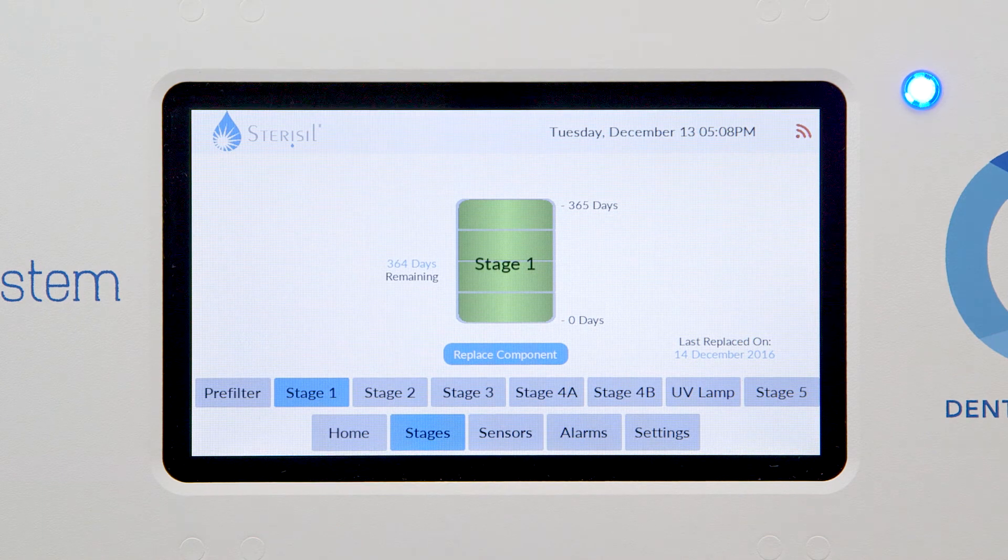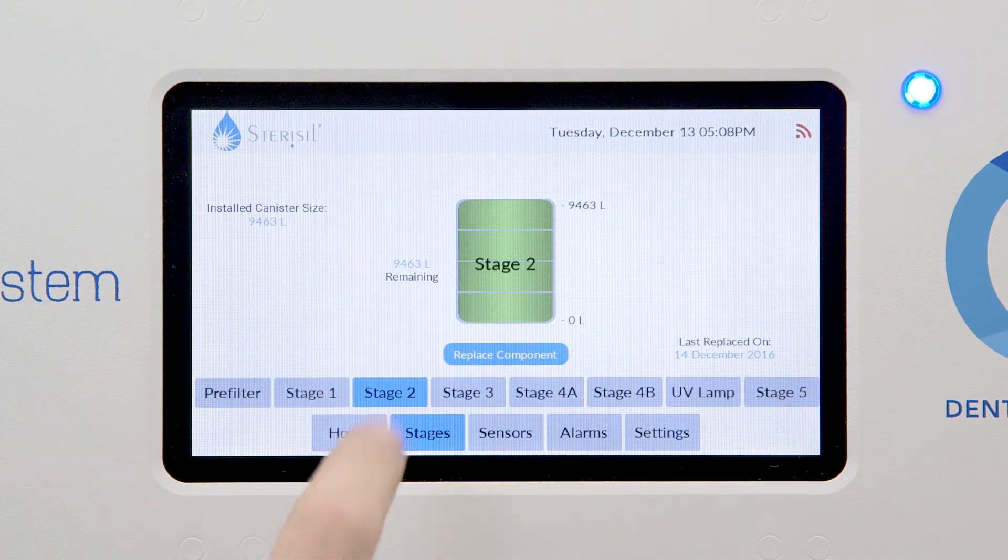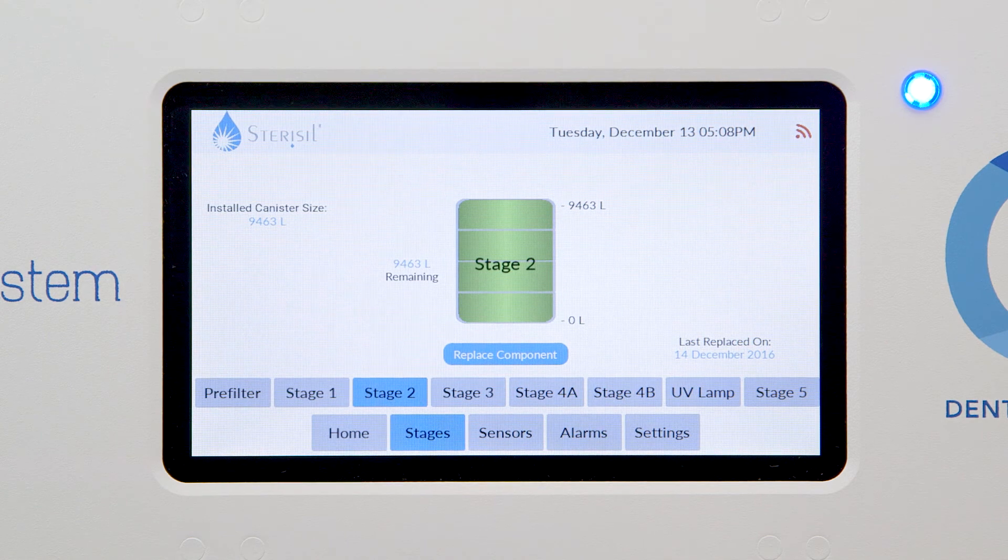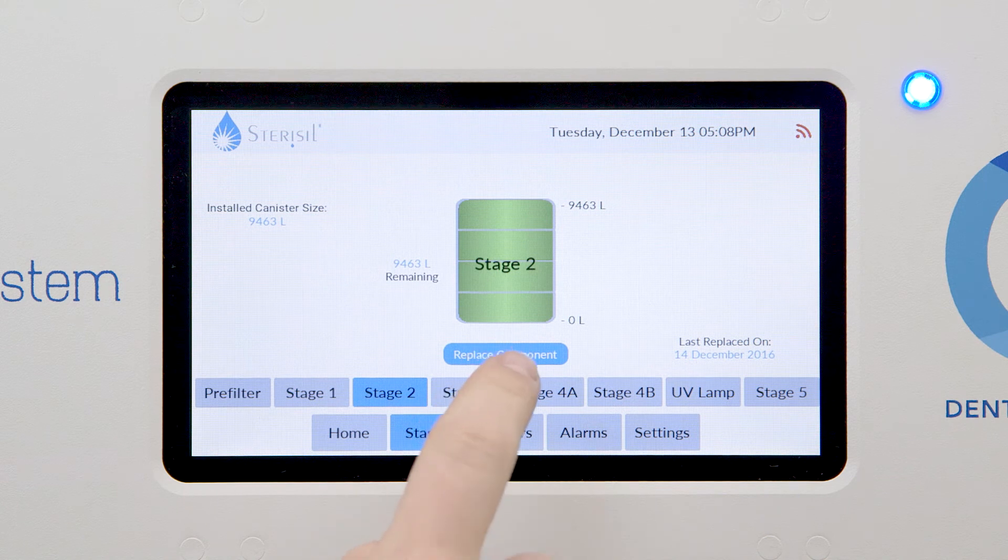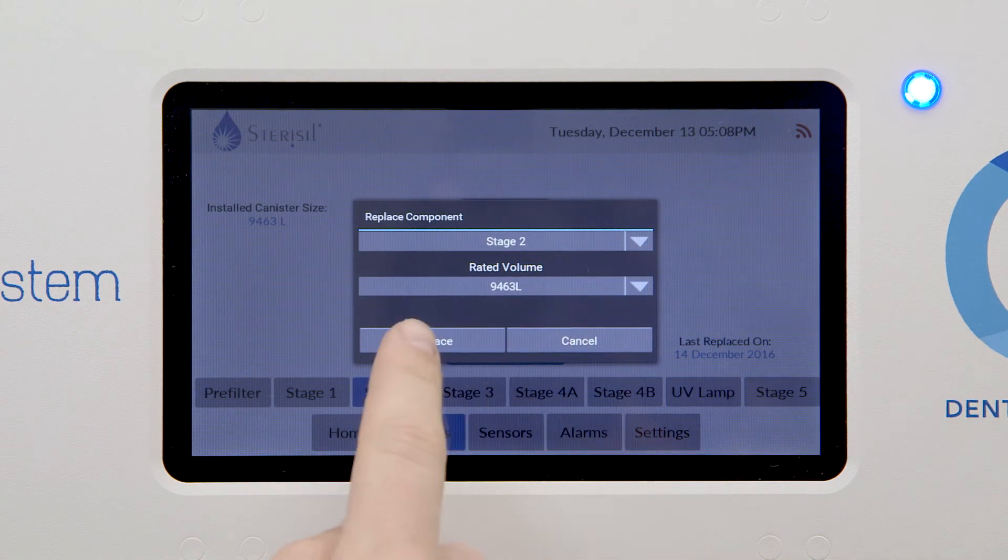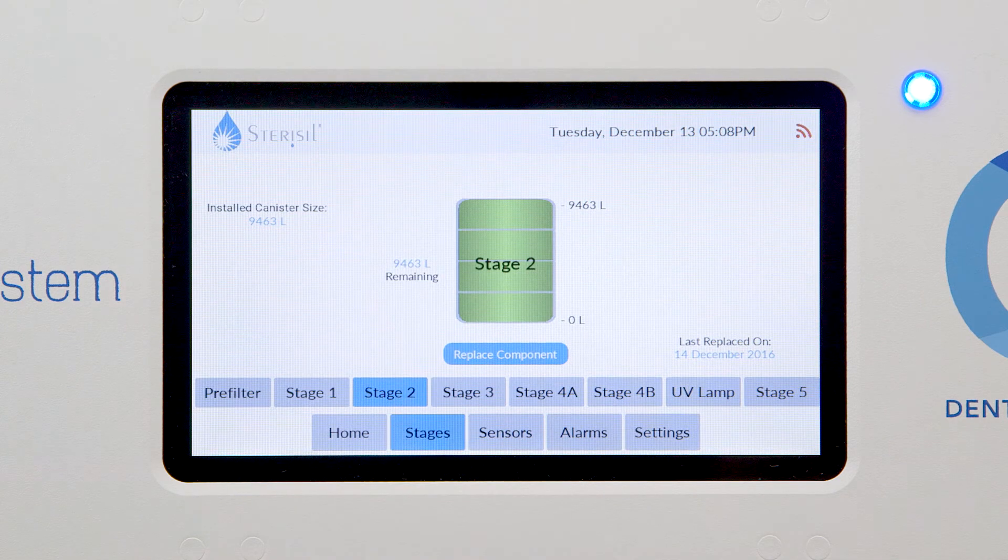Stage 2's lifespan is based on liters processed and is effective up to 9,463 liters. If the counter is not reading 9,463 liters, you'll select Replace Component. Choose Stage 2 from the drop-down menu and touch Replace.